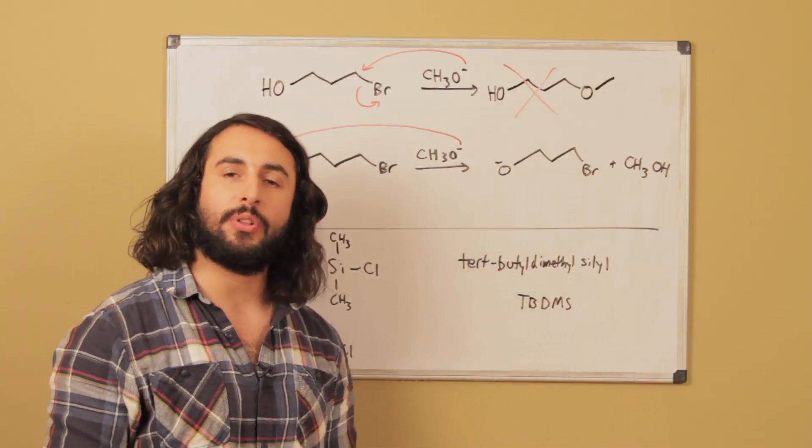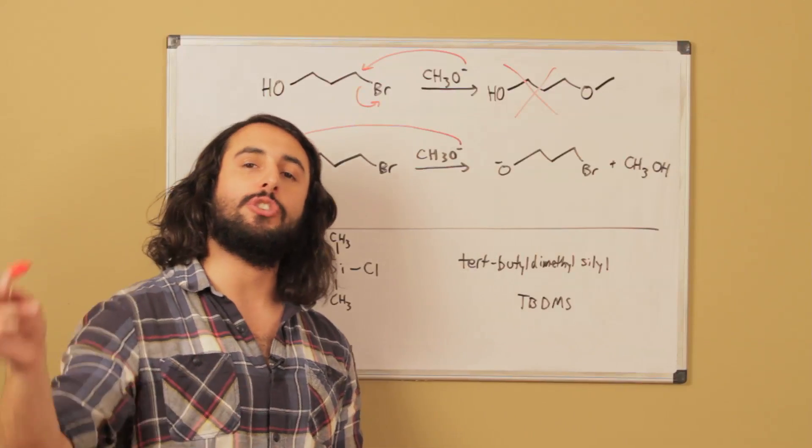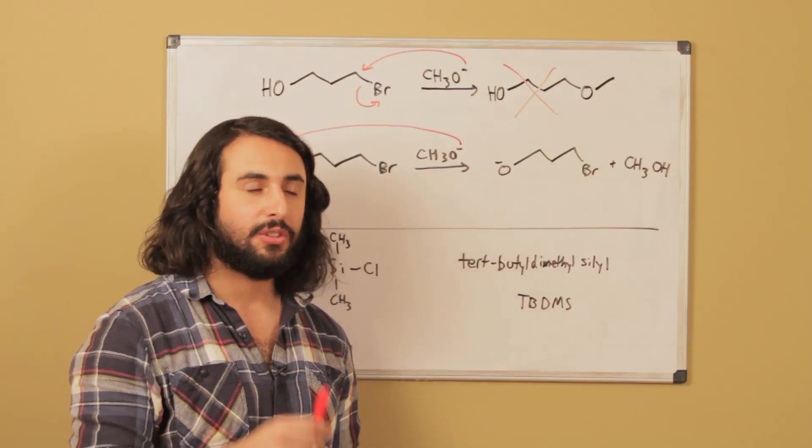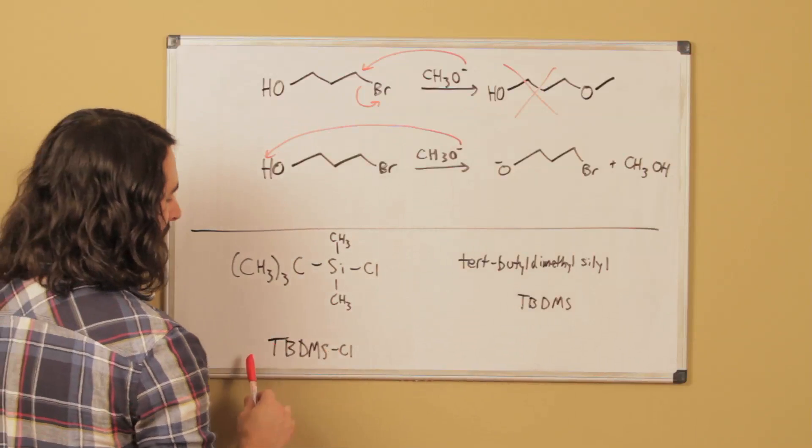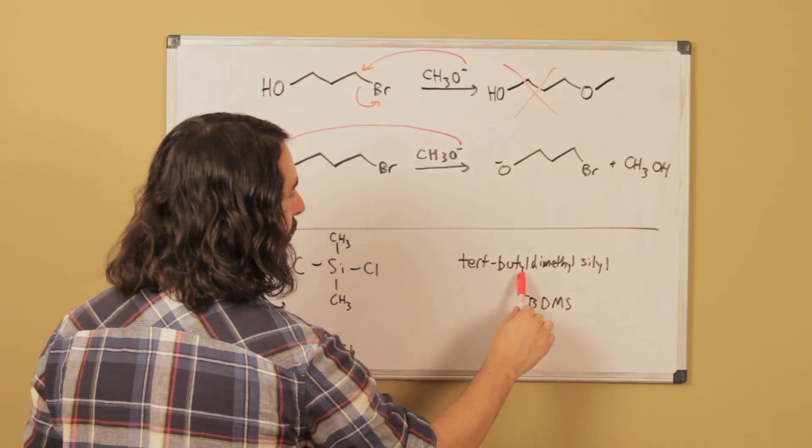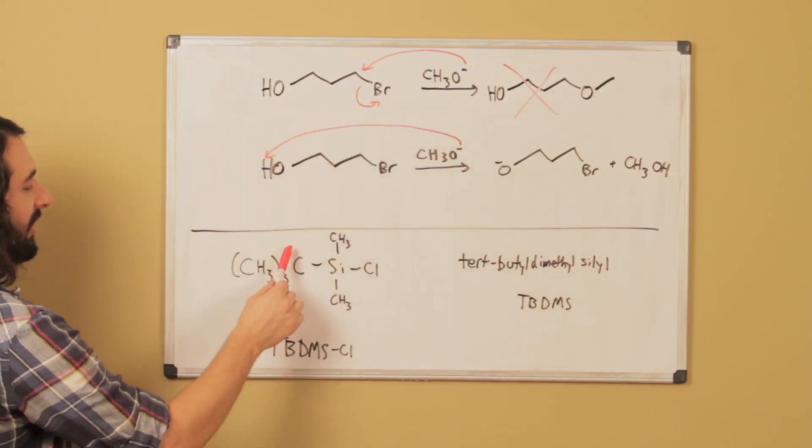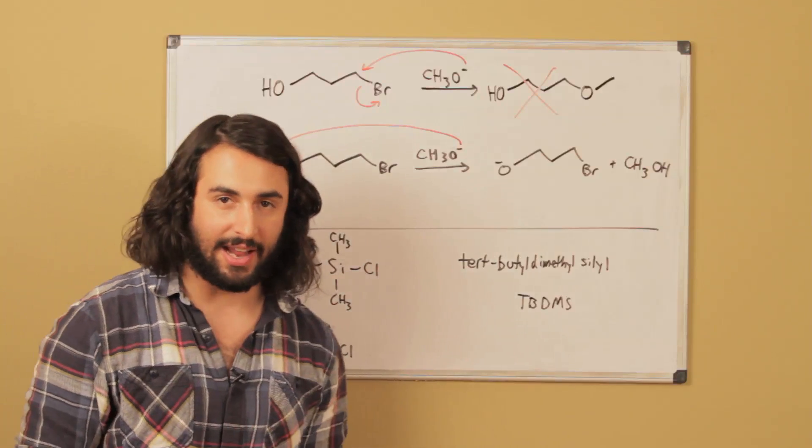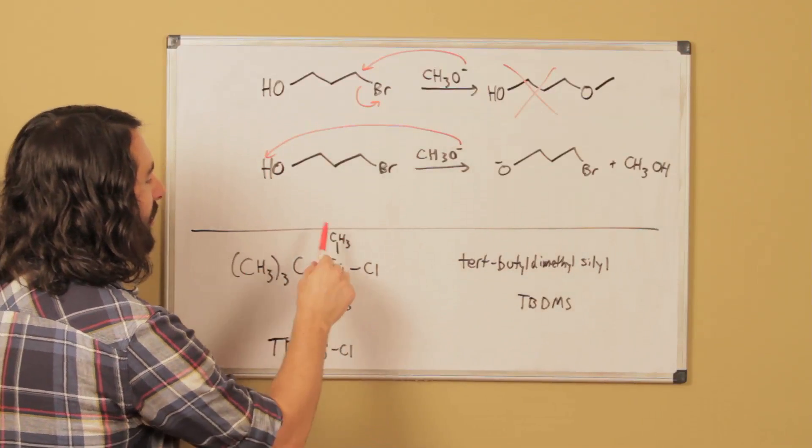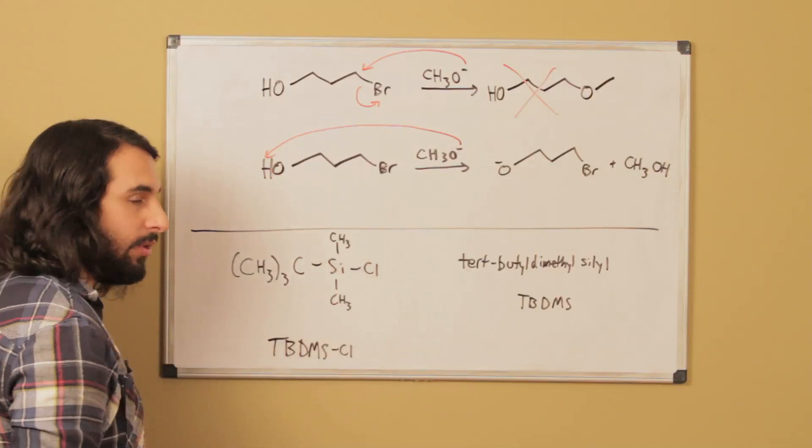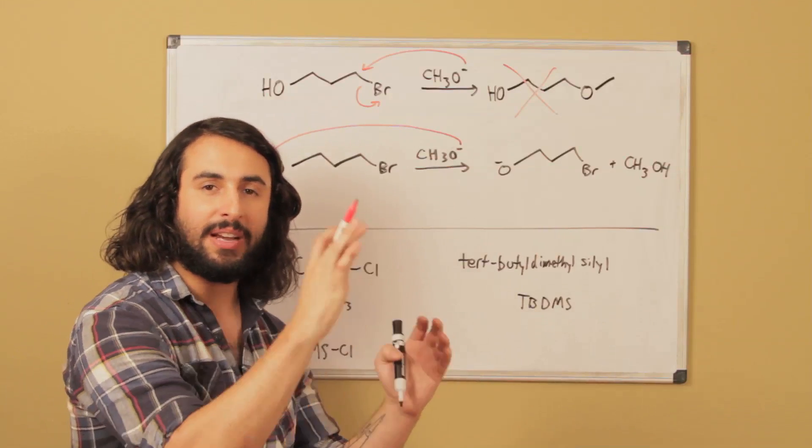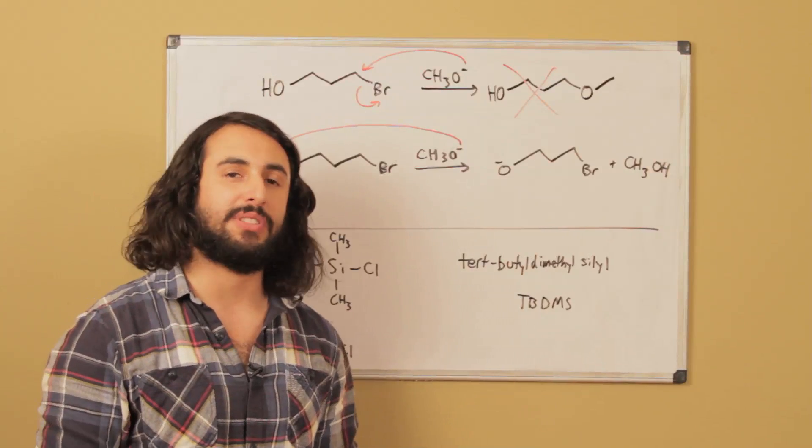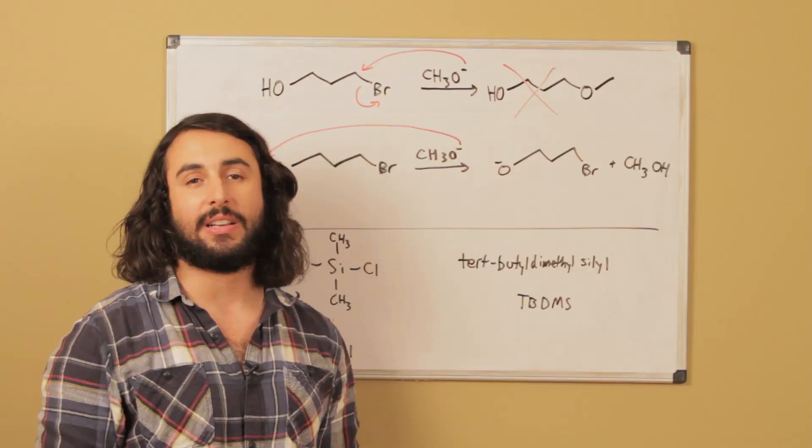There are ways to manipulate our substrate so we can do the SN2 we planned. We can protect that alcohol using a TBDMS group - tert-butyl dimethyl silyl. This will temporarily shield it from unwanted acid-base chemistry. We can do the SN2 we wanted and then deprotect it.